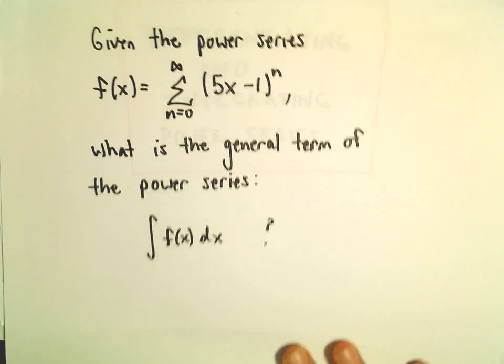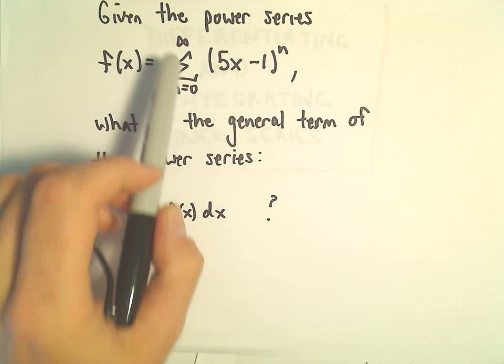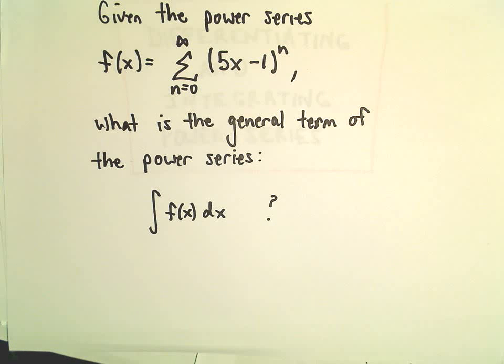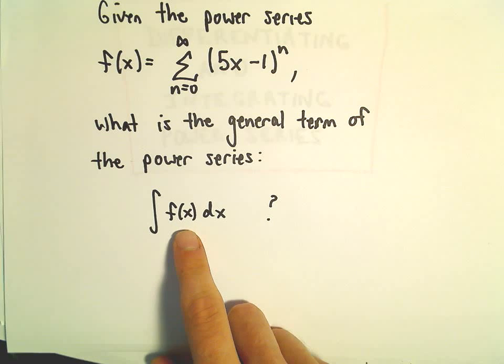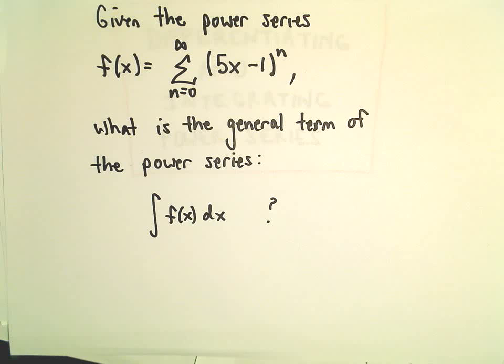All right, here we've got a power series, f of x equals the series from 0 to infinity, 5x minus 1 to the n. And we want to decide what's the general term of the power series when we integrate our function f of x.